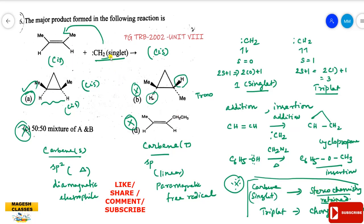Suppose triplet carbene is used instead — you would get option B, because the configuration changes. Singlet carbene gives the CIS cyclopropane (stereospecific, one product). Triplet carbene gives a mixture or the trans product.